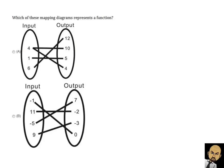Let's take a look at example A. The four is paired with a four, but it's also paired with a ten. If each input value is paired with only one output, it is a function. But here, because the four is paired with more than one output, this is not a function. In example B, negative one is paired with zero, eleven is paired with negative two, negative five is paired with seven, and nine is paired with negative three. Every input is only paired with one output, so B is a function.